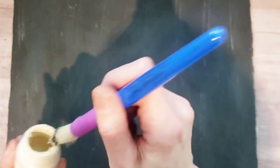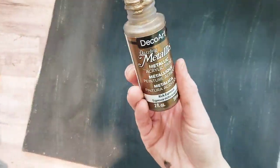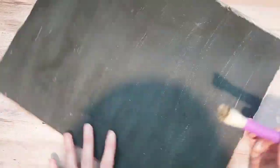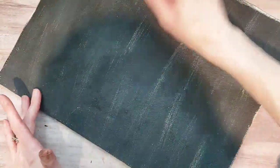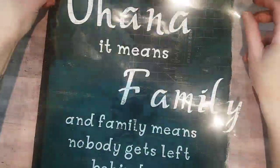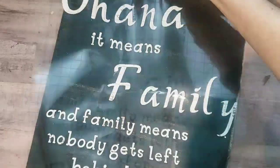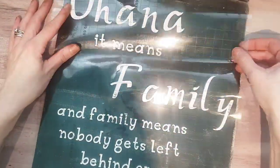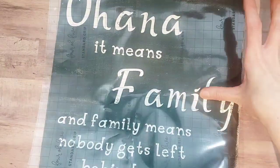When the canvas dried, I went in with a little cream dry brush and I actually did not like it. So I decided to use this metallic paint from Michaels. I'll link it below. It's like a goldish color and I liked that a lot better. And then after that, I decided to take this saying from Lilo and Stitch. Ohana, it means family and family means nobody gets left behind or forgotten.